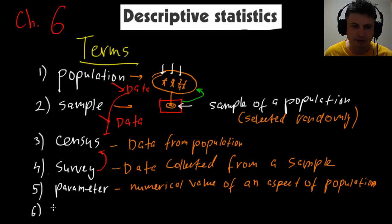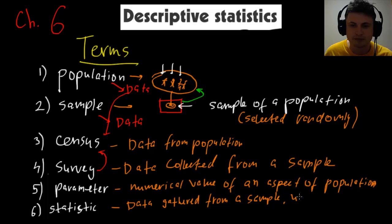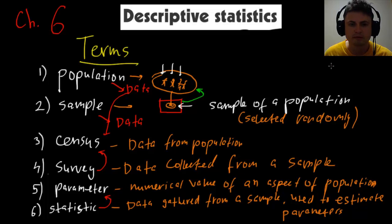And the last word here is statistic. Statistic singular. I don't know how to spell it, statistic. Statistic refers to data gathered from a sample. Data gathered from a sample that is then used to estimate a parameter, used to estimate parameters. So basically, statistic is used for parameter estimation. So they're kind of related to each other. So these are the six terms that you really should be familiar with. Try to remember what they mean. Try to understand them.